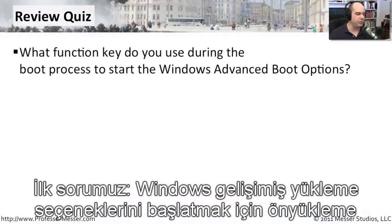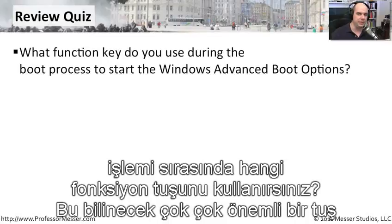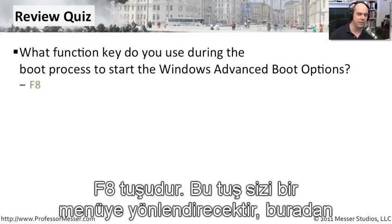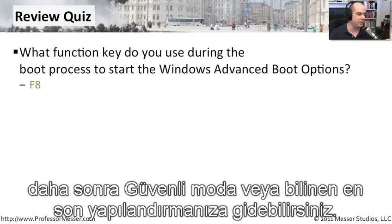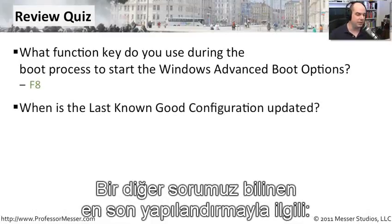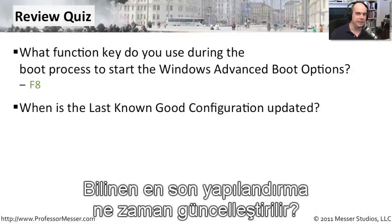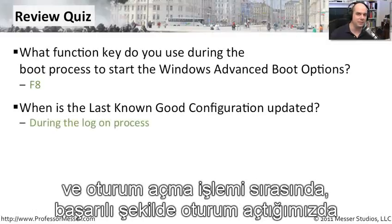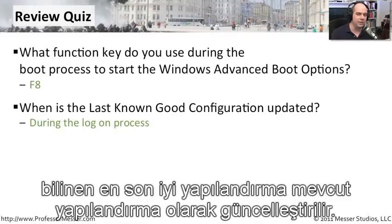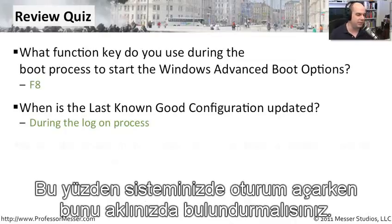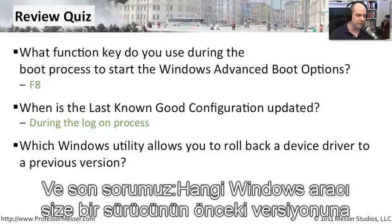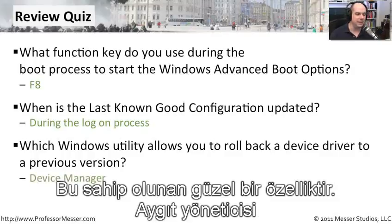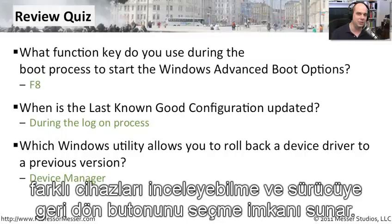Our first question: what function key do you use during the boot process to start the Windows advanced boot options? These are very important keys to know — it's the F8 key, which gets you to the menu to choose safe mode or last known good configuration. Next, when is the last known good config updated? It's updated right during the logon process — when you successfully log on, last known good configuration is updated to be the current config. And finally, what Windows utility allows you to roll back a device driver? That is the device manager, which lets you drill into specific devices and choose the rollback button.